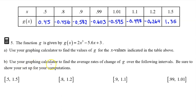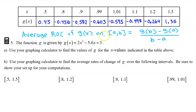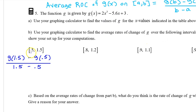Part b: use your graphing calculator to find the average rates of change of g over the following intervals. Be sure to show your setup for your computations. The average rate of change of g on the interval from a to b is given by g(b) minus g(a) over b minus a. So the average rate of change of g on the interval from 0.5 to 1.5 will be given by this expression. We can type this expression into the calculator almost exactly as it is, using y1 instead of g.